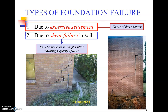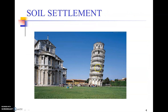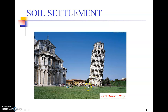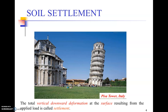Shear failure will be covered under bearing capacity if not already discussed in previous classes. Now, a very common classical example of differential settlement is the Leaning Tower of Pisa in Italy. As you can see, it has settled more on its right-hand side and settled very little or not at all on its left-hand side. It is clearly out of plumb by certain degrees. The total vertical downward deformation at the surface resulting from the applied load is called settlement.